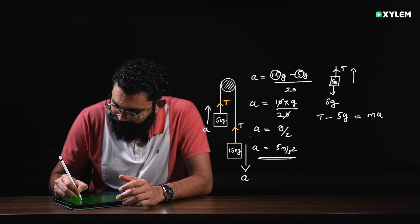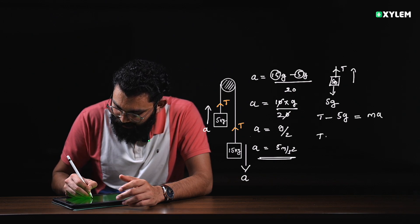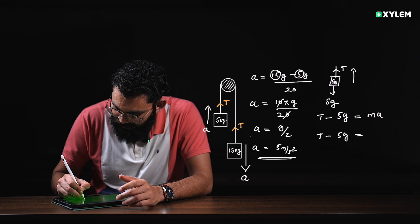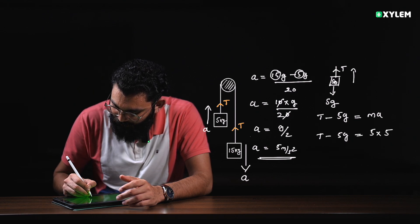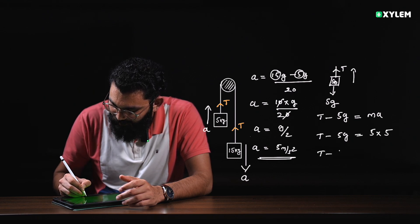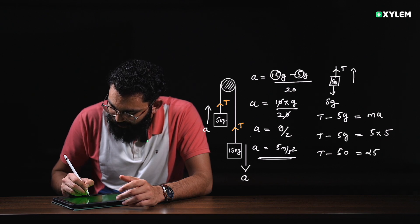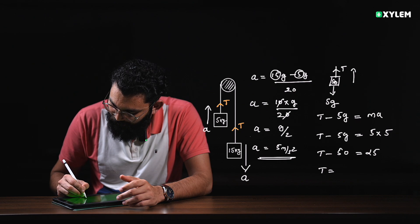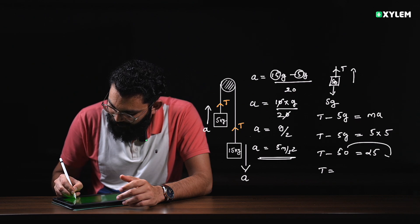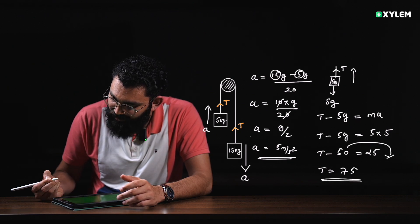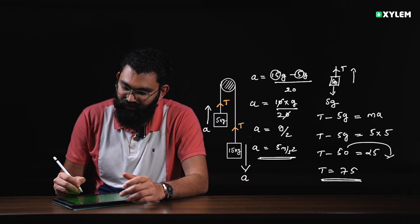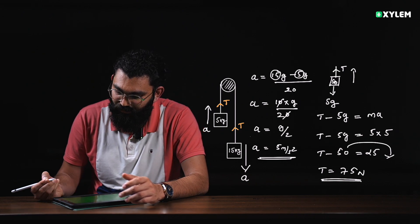For the 5 kg block, tension minus 5g equals mass times acceleration: T minus 5g equals 5 times 5. So T minus 50 equals 25, therefore T equals 75. Checking: 75 minus 50 equals 25. So tension is 75 N.